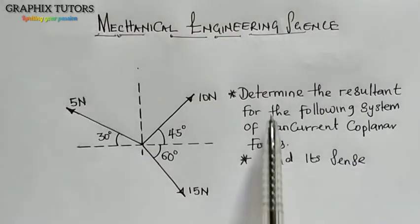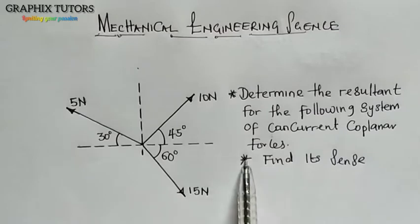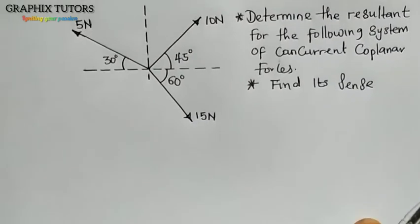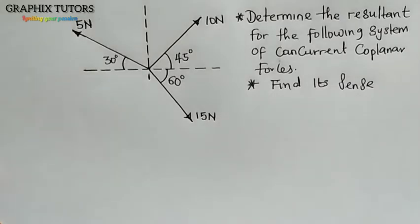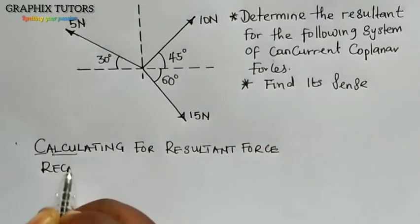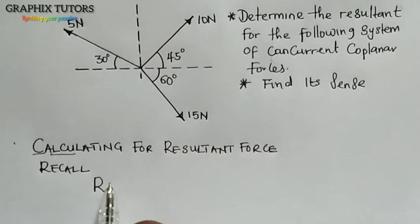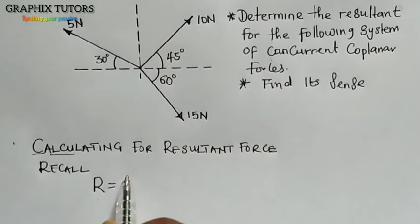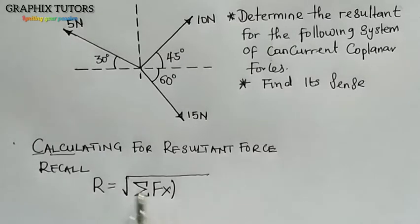The question here says that we should determine the resultant force for the following System of Concurrent Coplanar Forces, and also find its sense. The first thing you need to know is that we are looking for the resultant force. Recall, we know that the resultant force R is equal to the square root of the summation of Fx squared plus summation of Fy squared.